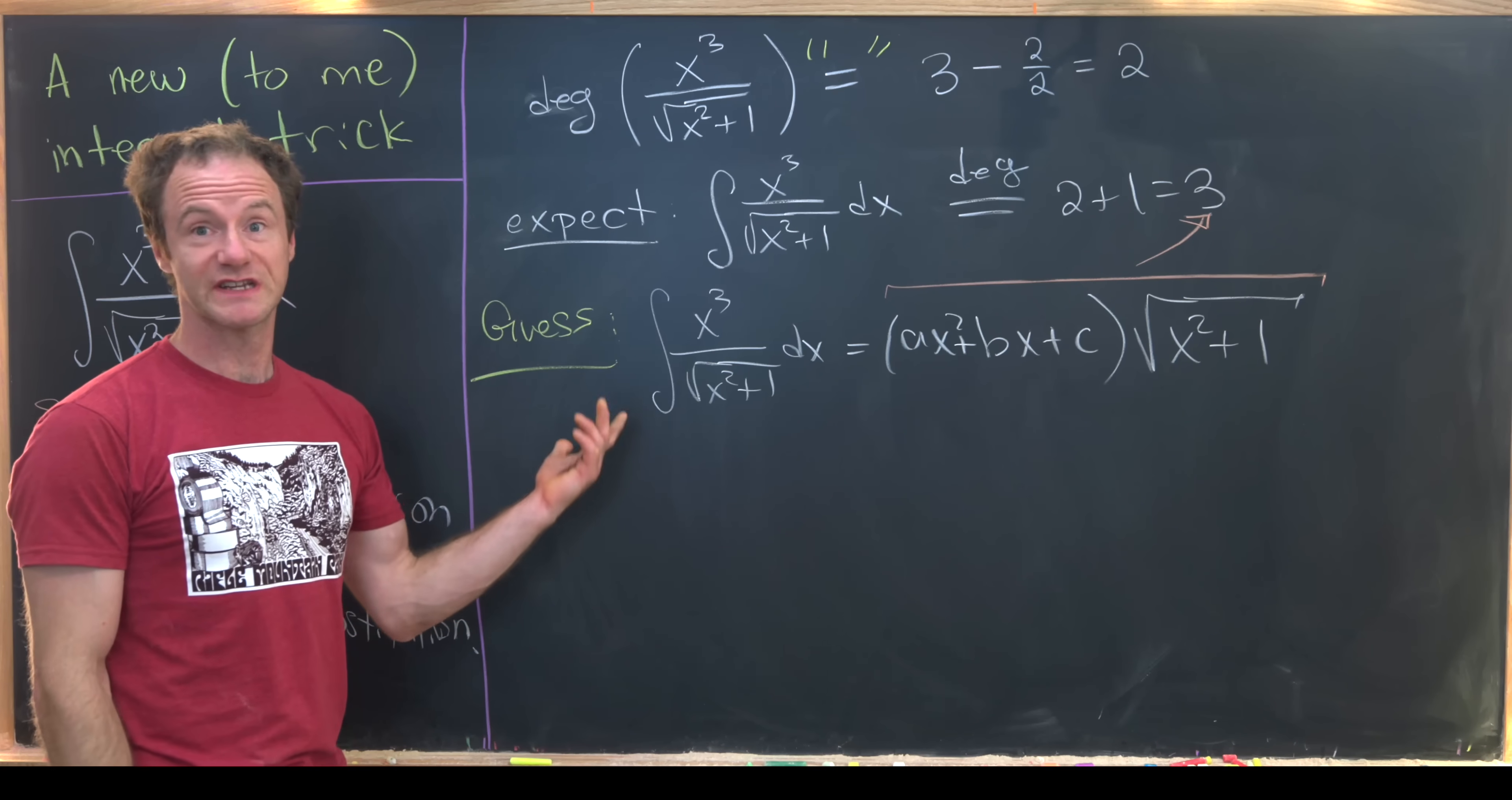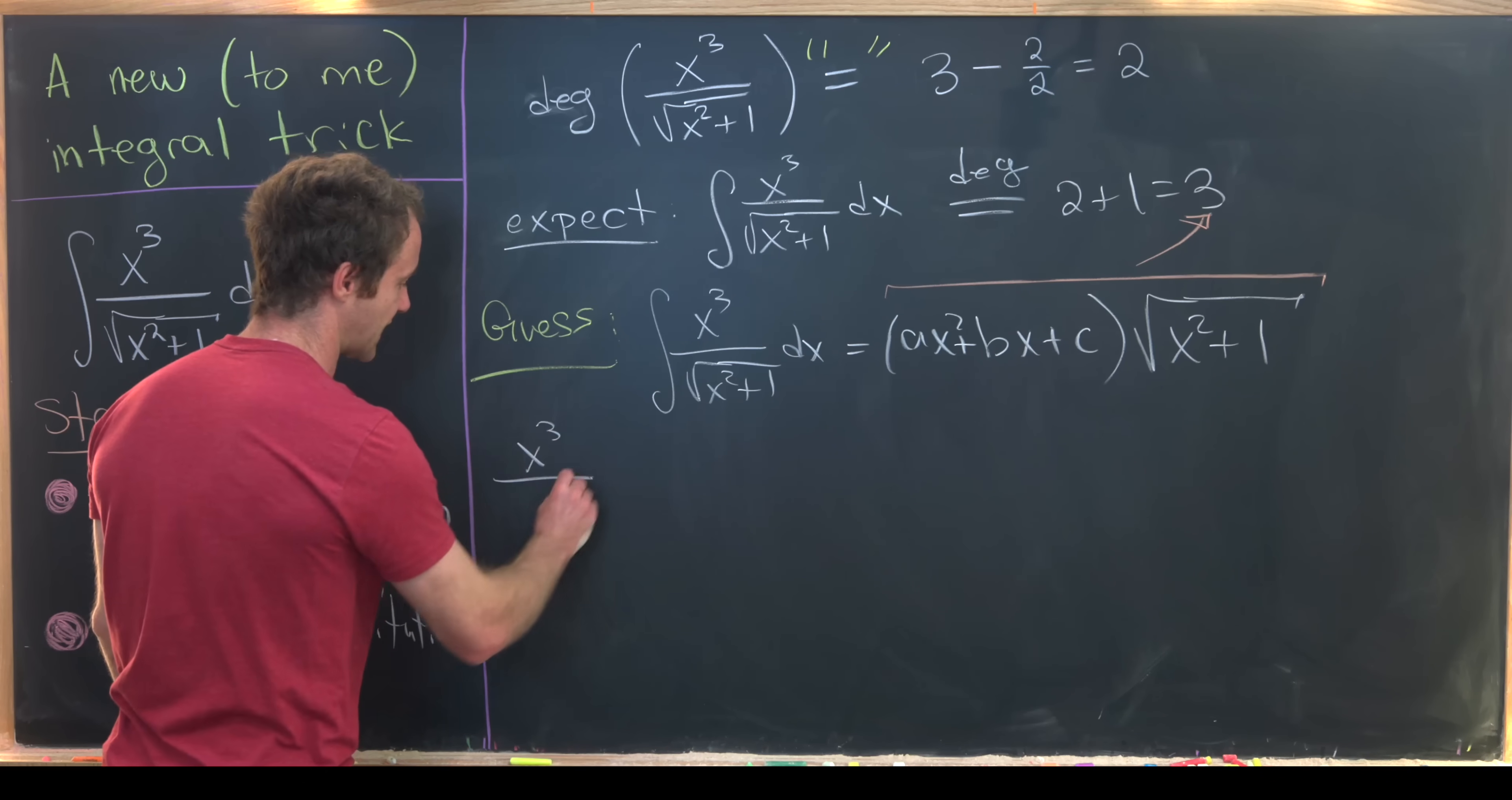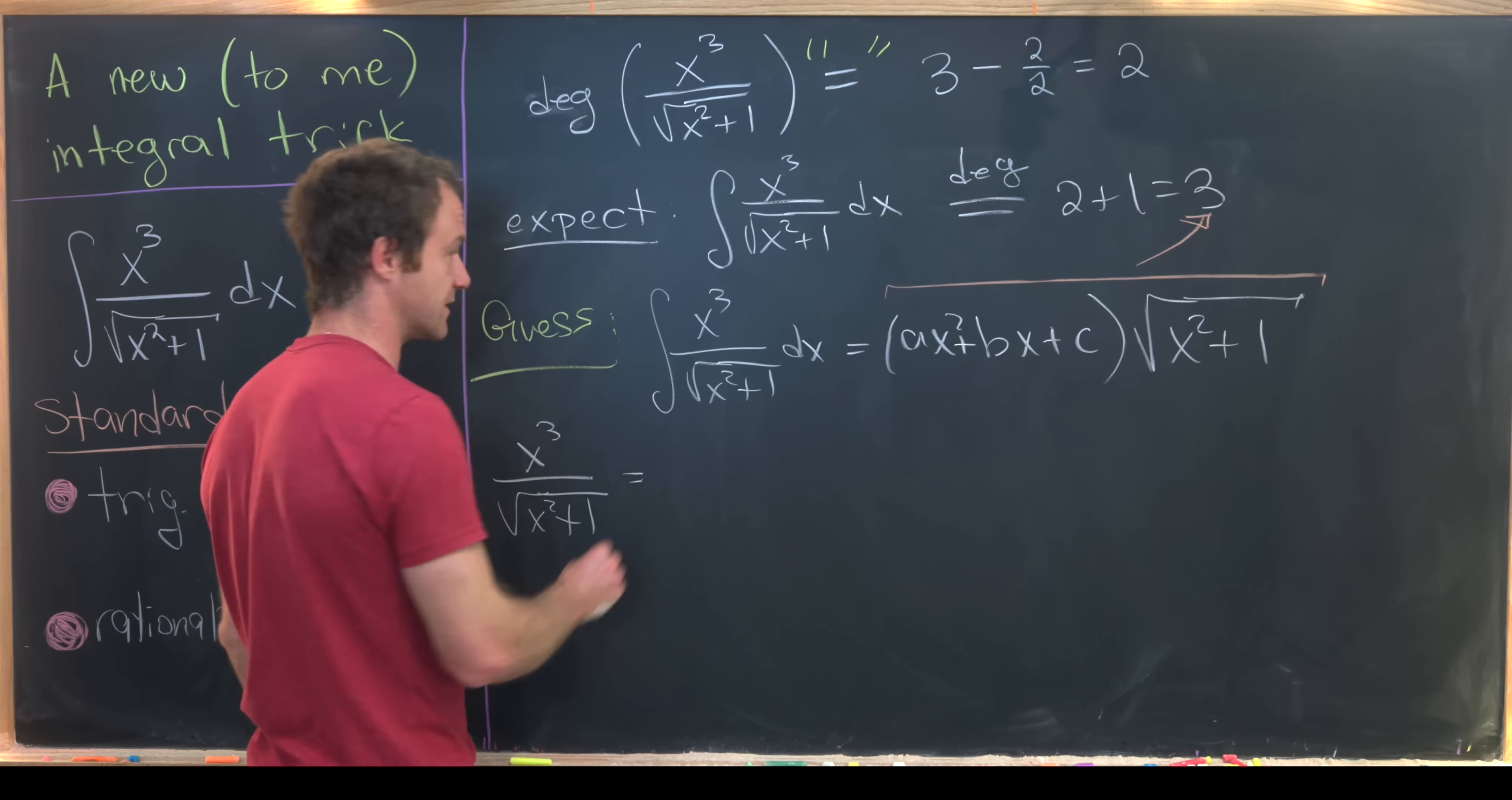Then from here, we're just going to take the derivative of both sides. So notice taking the derivative of the left-hand side and using the fundamental theorem of calculus will give us x cubed over square root of x squared plus 1.